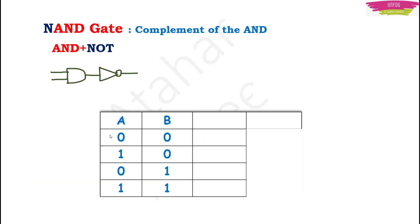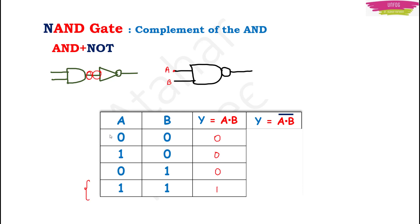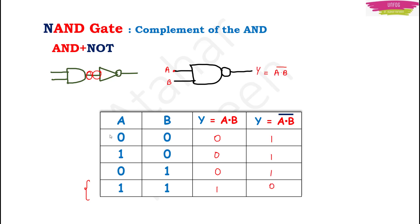Now let's talk about NAND gate. In the same manner, you put AND gate as input of the NOT gate, so the AND output gets complemented. That is why it is called NAND gate — it is the complement of AND gate. This is the symbol: you take the AND gate symbol and add a circle in front, giving you NAND gate. The output is complement of A into B. For AND gate outputs 0, 0, 0, 1 — the NAND gate gives the opposite: 1, 1, 1, 0. So NAND gate is the one gate where output becomes 0 only when both inputs are 1.